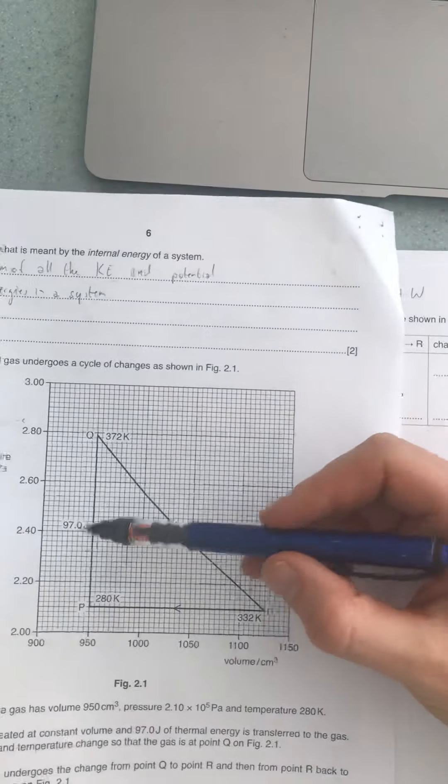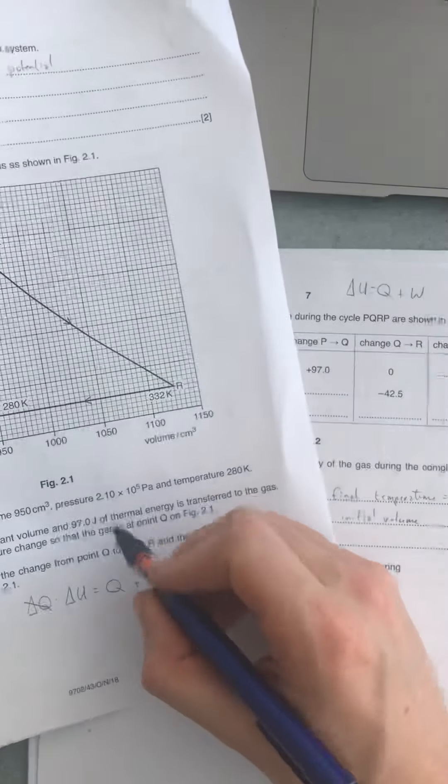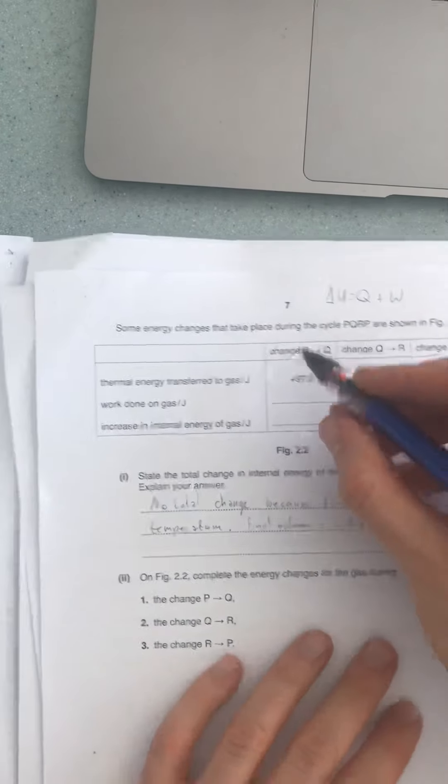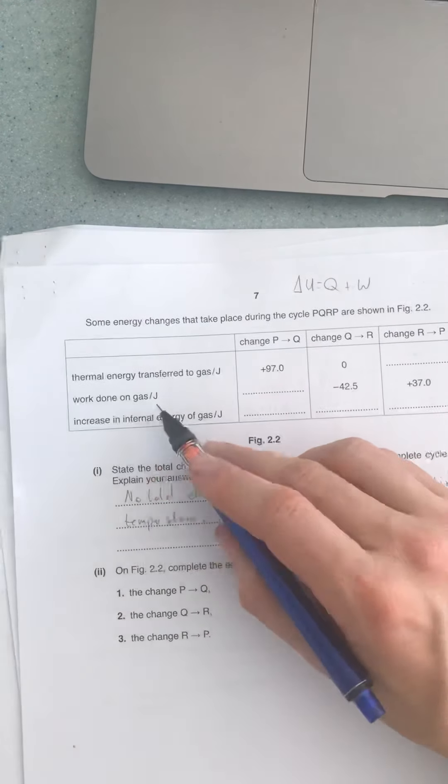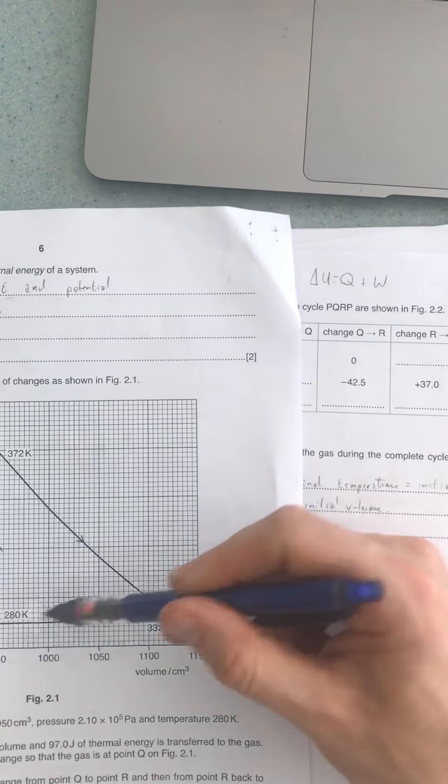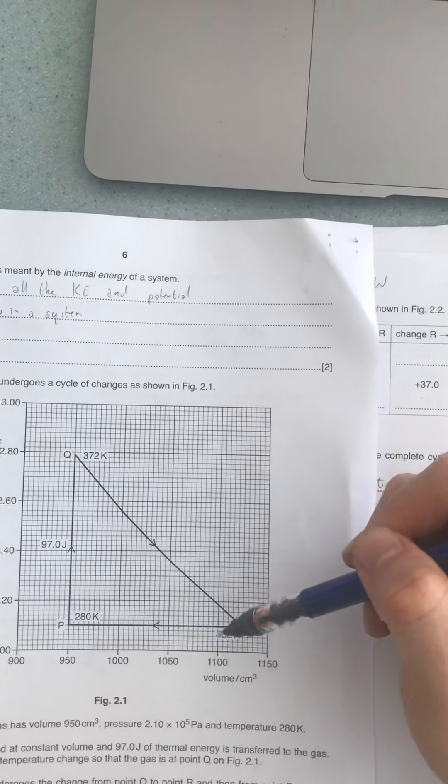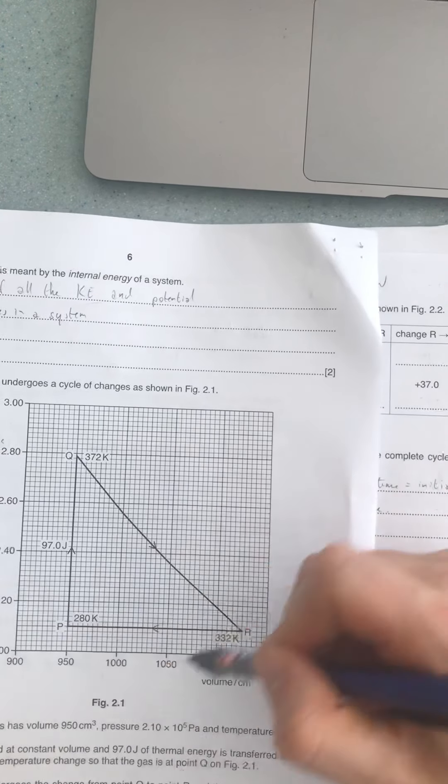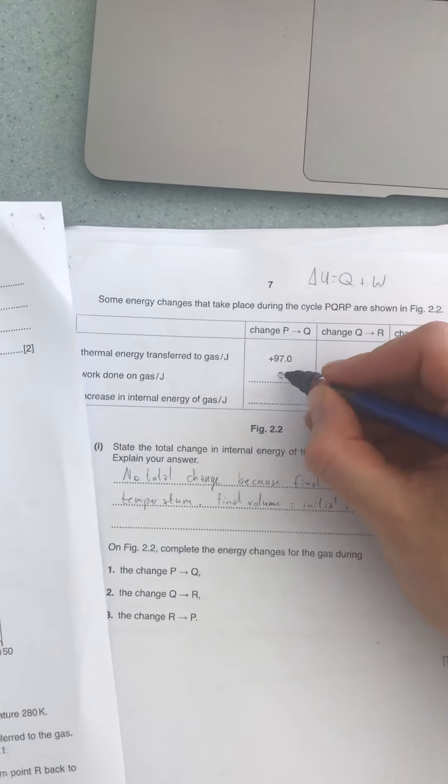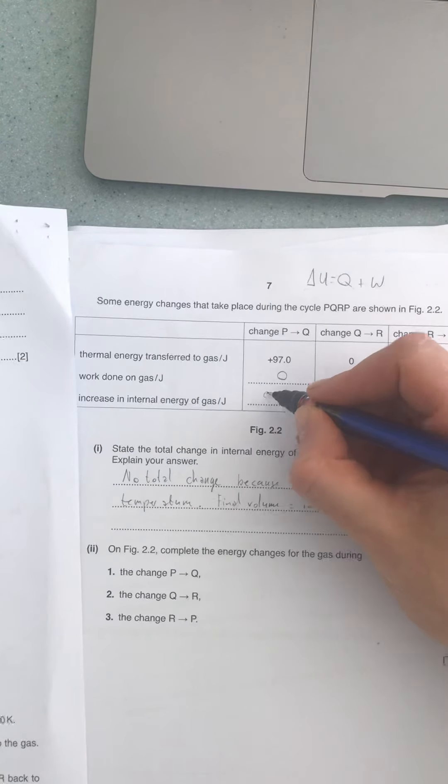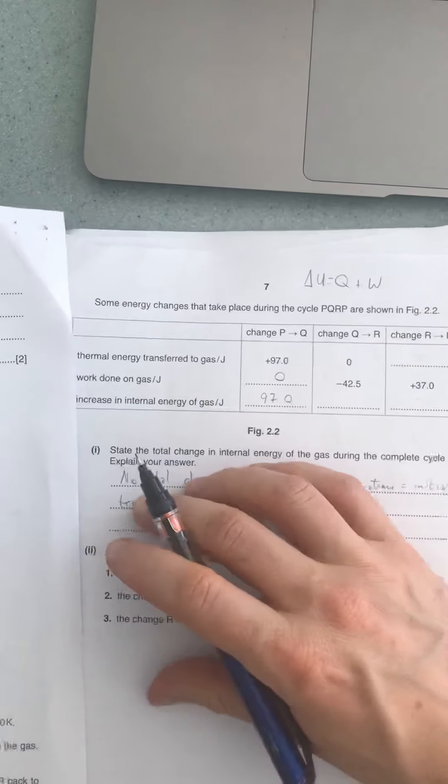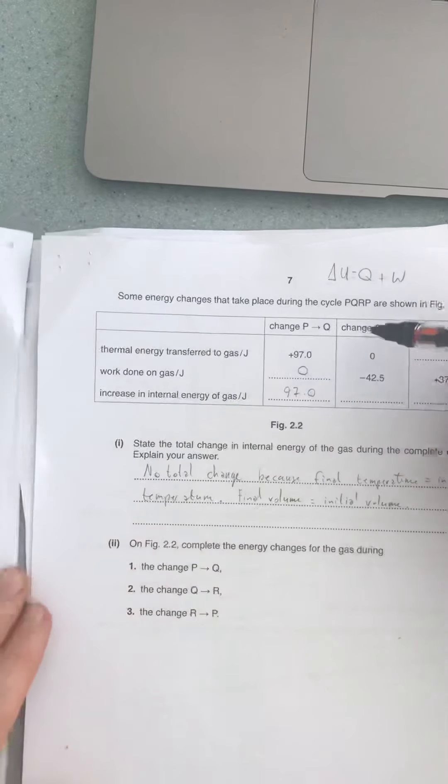We can see some heat energy is applied because it tells us that 97 joules of thermal energy. Work done on the gas—well, actually no work is done, and that's because no volume has changed. Remember work done is force multiplied by distance, and there's been no overall distance change for this thing. So the work done on the gas is zero, which means the increase in internal energy is just 97 joules.